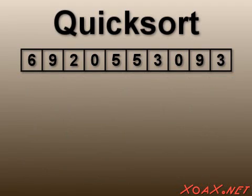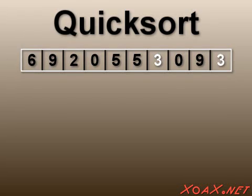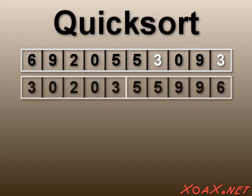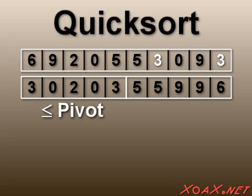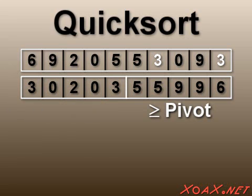We begin the Quicksort with an unordered array. Then we choose a pivot — in this case, the selected pivot is 3. The pivots will be shown in white above the respective partitions. After the first partition step, the array is split into the elements that are less than or equal to the pivot, and those that are greater than or equal to the pivot.